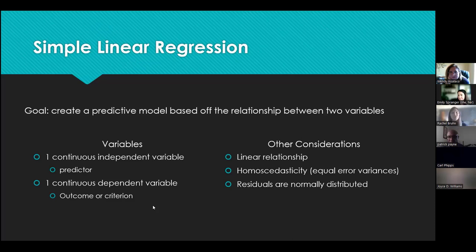The data won't form a perfect line, but creating a model requires one, so we're compromising the data to create a line — which means the line is subject to error. Those errors have assumptions that must be met, including homoscedasticity — the idea of consistent error variances.